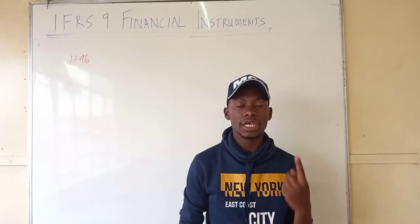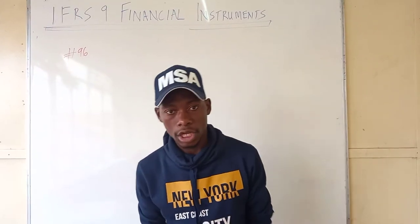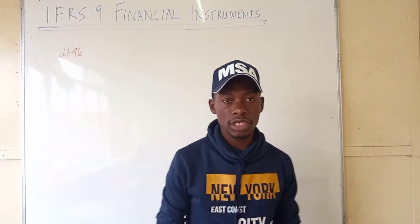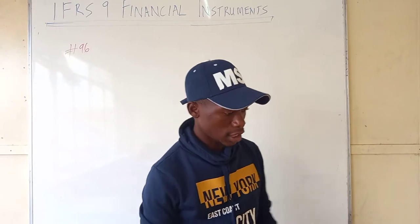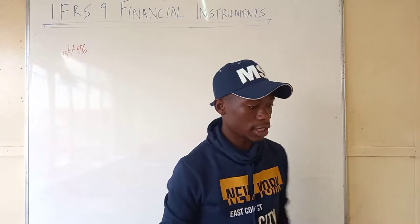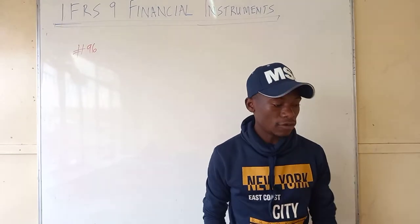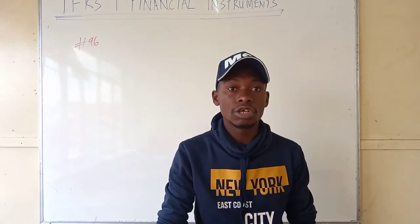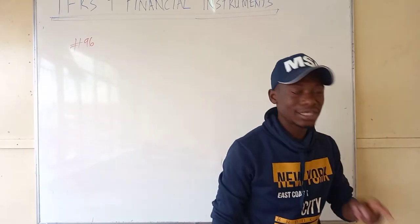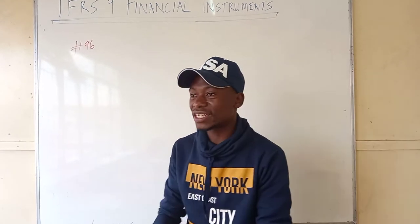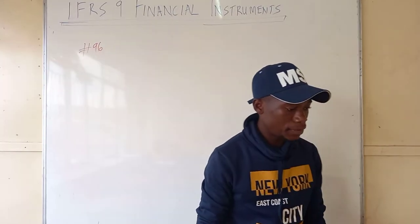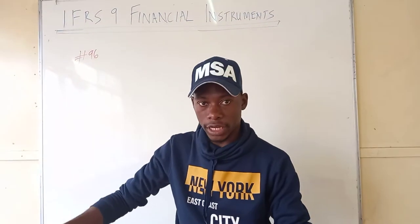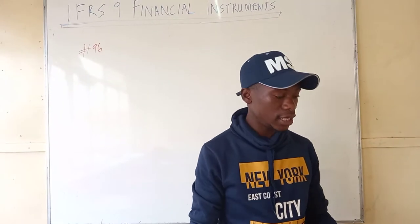A convertible loan note means the debt holder can choose to receive the loan repayment or have shares. But when doing financial instrument accounting, we don't use the assumption that it will be converted into shares. A similar instrument without the conversion option yields an interest rate of 10%. So we are going to use 10% to discount our cash flows, not 8%. The 8% is just there to confuse you.